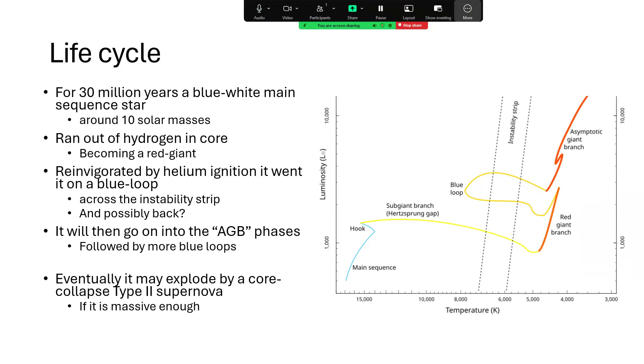The temperature drops, and it becomes red again on the AGB asymptotic giant branch, which is a kind of super red giant, where you have an inert carbon oxygen core, and around that a helium shell, and then a hydrogen shell over the top of that.